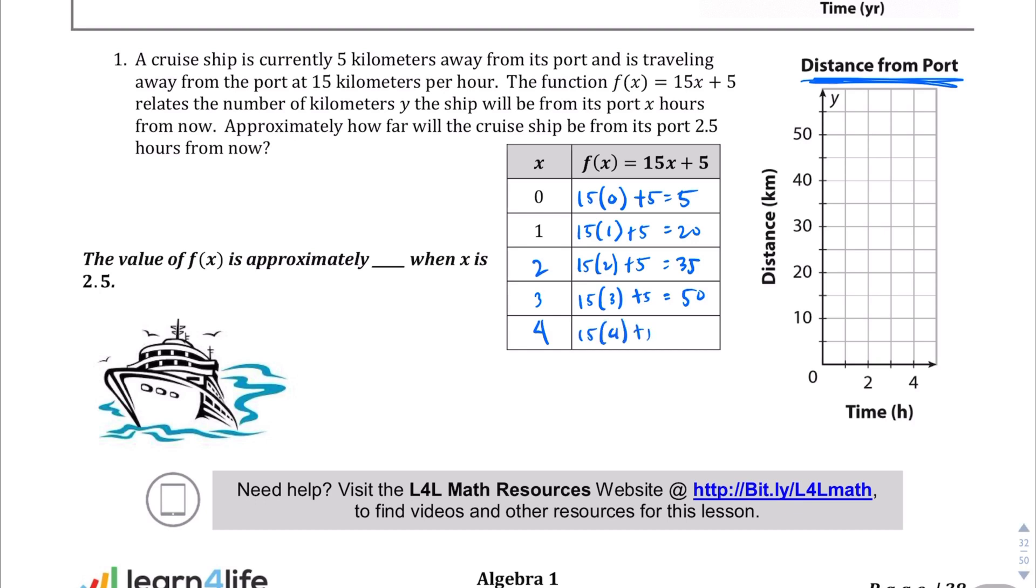Okay, so let's graph those. Zero comma five is right here. One comma 20 is right about here. Two comma 35 is right about here. Three comma 50 is right about here. And then four comma 65 is going to be off the graph, so I'm not even going to draw the line for that.